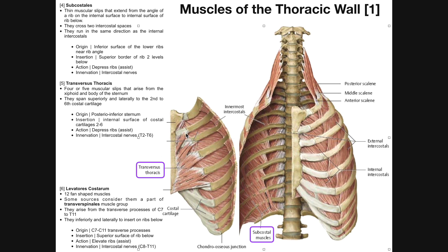The transversus thoracis muscles do not span the entire rib cage, so their innervation is only going to be through the intercostal nerves from T2 to T6, which makes sense because that's really where they're attaching superiorly — the costal cartilages of ribs two through six. The blood supply would be due to the intercostal artery and veins in the intercostal spaces two through six.